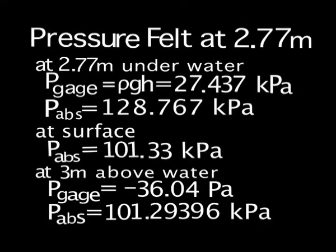Here is some information about pressure. At two point seven seven meters under the water, the gauge pressure was twenty-seven point four three kilopascals. The absolute pressure, which is a column of air in the water and the gauge pressure combined, is approximately one hundred and twenty-eight point seven six seven kilopascals. At the surface, the absolute pressure was one hundred and one point three three kilopascals. At three meters above the water, the gauge pressure is thirty-six point oh four pascals, because the only thing above you is a column of air. The absolute pressure was one hundred and one point three kilopascals.